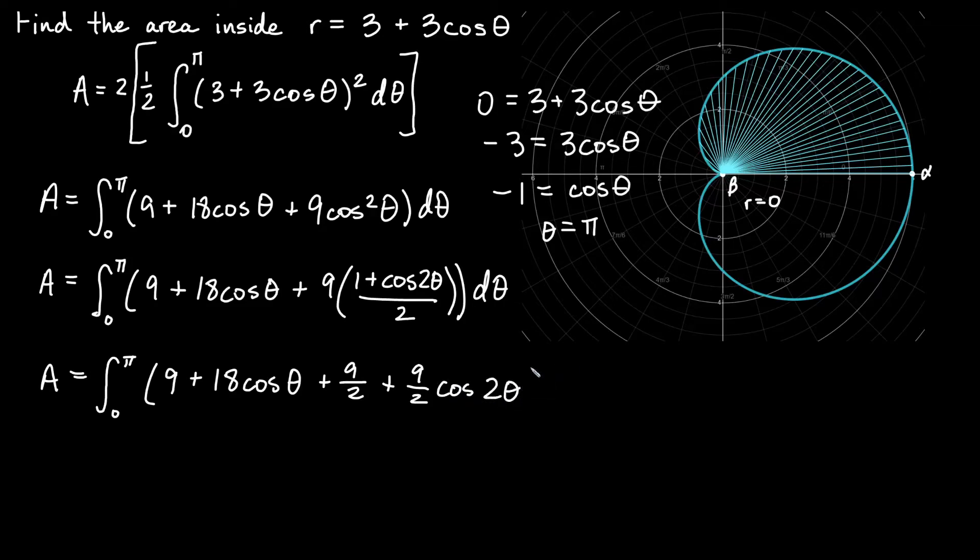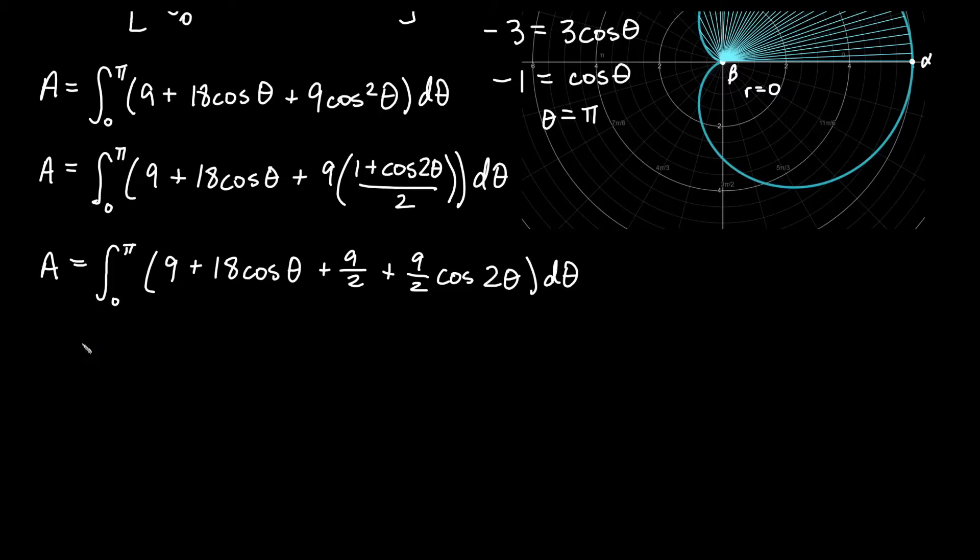And I could go ahead and combine my 9 and my 9 halves if I want. I'm just going to go ahead and integrate right now. Let's just go ahead and do this. So my area is going to equal integrating d theta. So 9 d theta would give me 9 theta. And then integrating 18 cosine theta. Integral of cosine theta is sine theta. So we would get plus 18 sine theta.